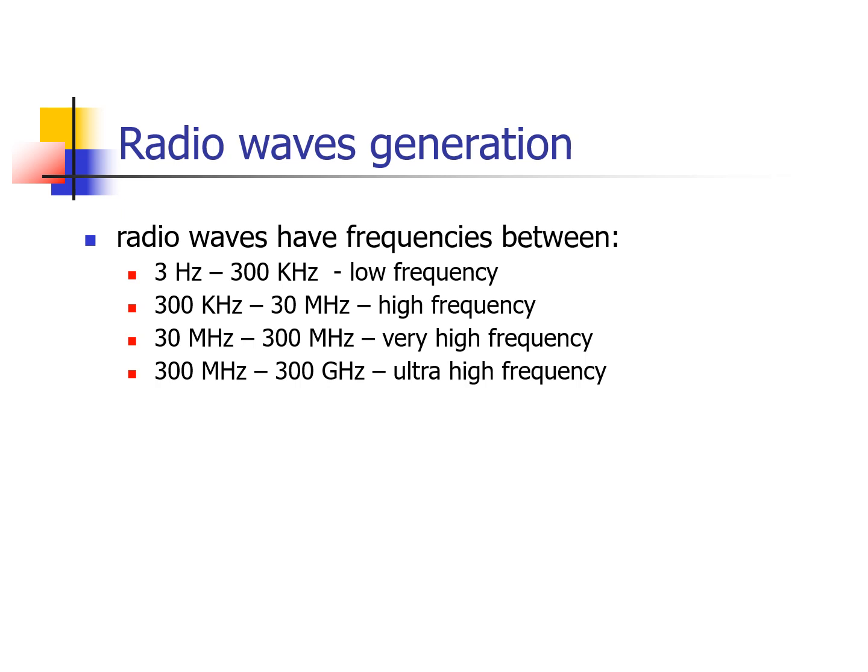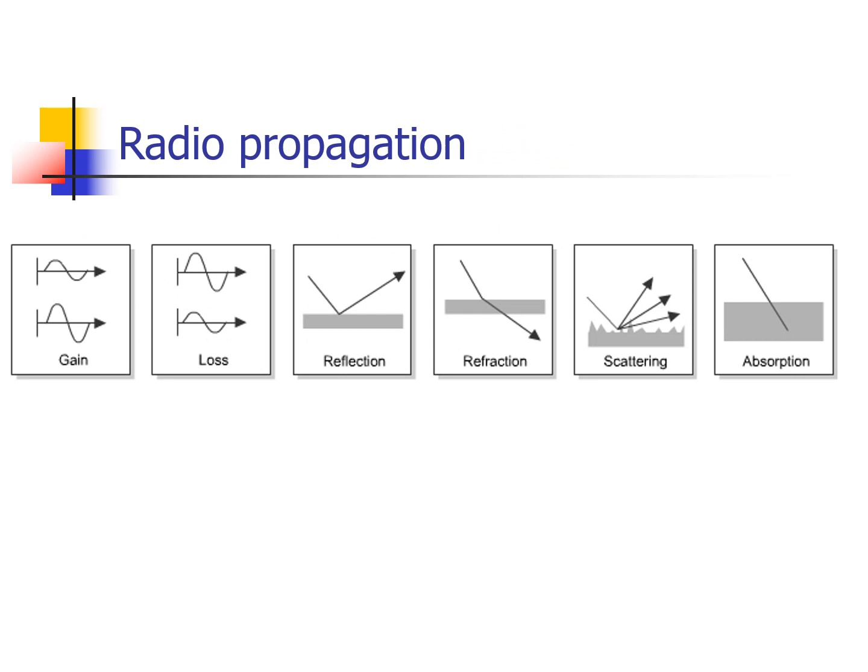The generated radio waves have frequencies between 3 Hz and 300 GHz, and are categorized as low-frequency, high-frequency, very-high-frequency, and ultra-high-frequency.